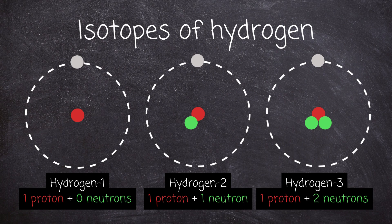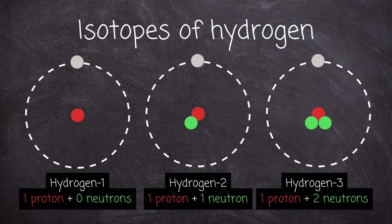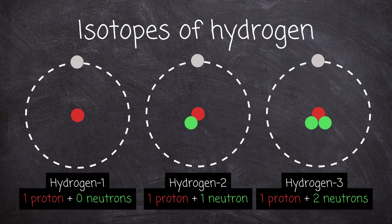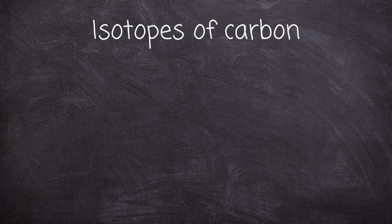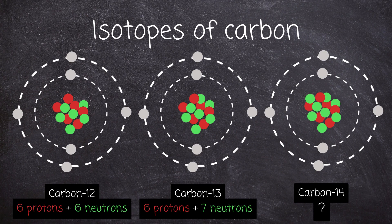Hydrogen-2 has two nucleons, one proton and one neutron. Hydrogen-3 has three nucleons, one proton and two neutrons. The isotopes of carbon have six protons but differing numbers of neutrons.